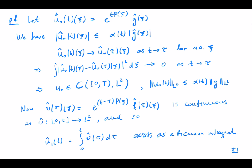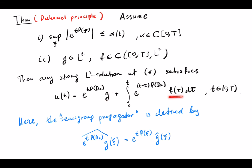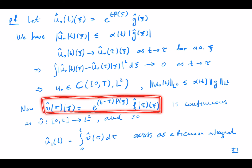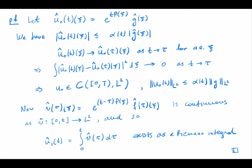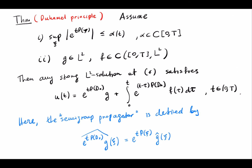Now we look at the second integral term. The integrand is essentially the same thing as the first part, but with initial time tau and evolution time t minus tau. Let's call that function v-hat tau. This is continuous as a function of tau with values in L^2, and because it is a continuous function of tau, we can integrate it in L^2. This integral exists as a Riemann integral, which shows that the Duhamel formula is valid.